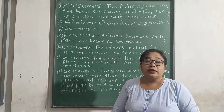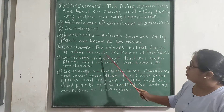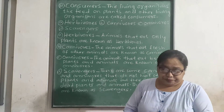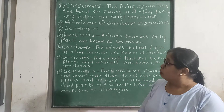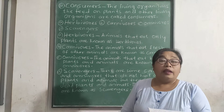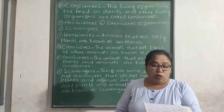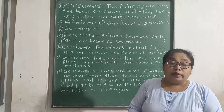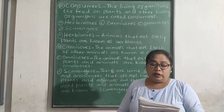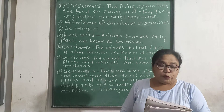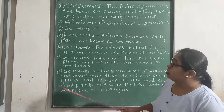Now let us discuss carnivores. The animals that eat the flesh of other animals are known as carnivores. Examples of carnivores are lion, tiger, and wolf. They have sharp teeth and claws to tear flesh. There are also flesh-eating birds, such as eagles, which have sharp claws to catch their prey and hooked beaks to tear off the flesh.